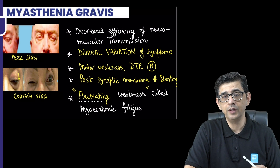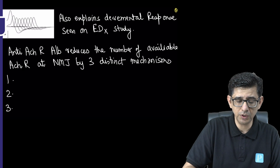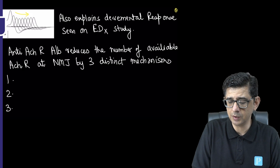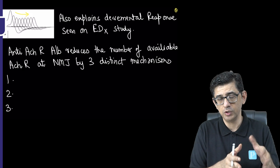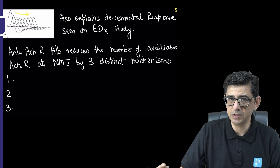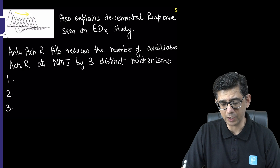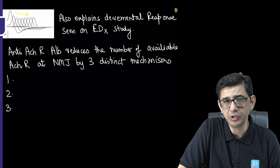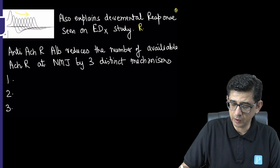On repetitive nerve stimulation test performed at a low frequency of 2-3 Hz, you will notice a progressive decline in amplitude of more than 10%. This is the mathematical definition of fluctuating weakness — a decremental response of more than 10% in action potential amplitude on repetitive nerve stimulation. The best electrodiagnostic test for this condition is single-fiber electromyography; if unavailable, repetitive nerve stimulation test is the second-best answer for electrodiagnosis.